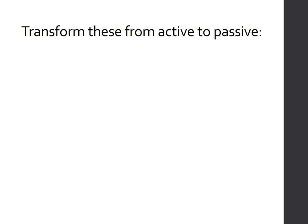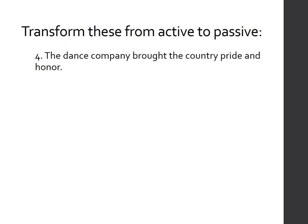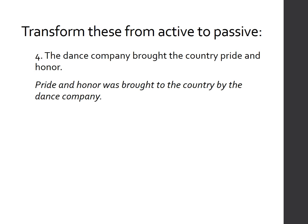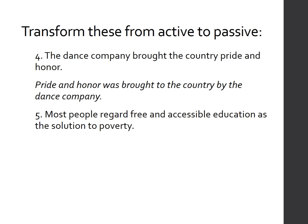Number four: 'The dance company brought the country pride and honor.' This pattern is S-T-V-I-O-D-O. 'Brought what?' — pride and honor (D-O). 'To/for whom?' — the country (I-O). 'Pride and honor' becomes the new subject. 'Brought' becomes 'was brought' since it's in past tense. Result: 'Pride and honor were brought to the country by the dance company.'